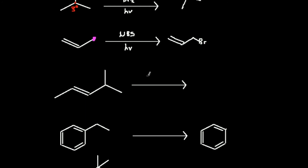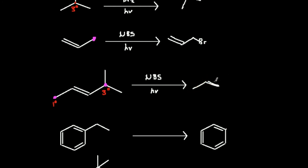In the next example, I also have a double bond, so I have to use NBS and light. Now I have two potential positions I could brominate at — one adjacent to the double bond on the left, which is primary (only one carbon group attached), and one on the right, which is tertiary (three carbon groups attached). The highest degree position will be selectively brominated, so the tertiary position is selectively brominated over the primary.